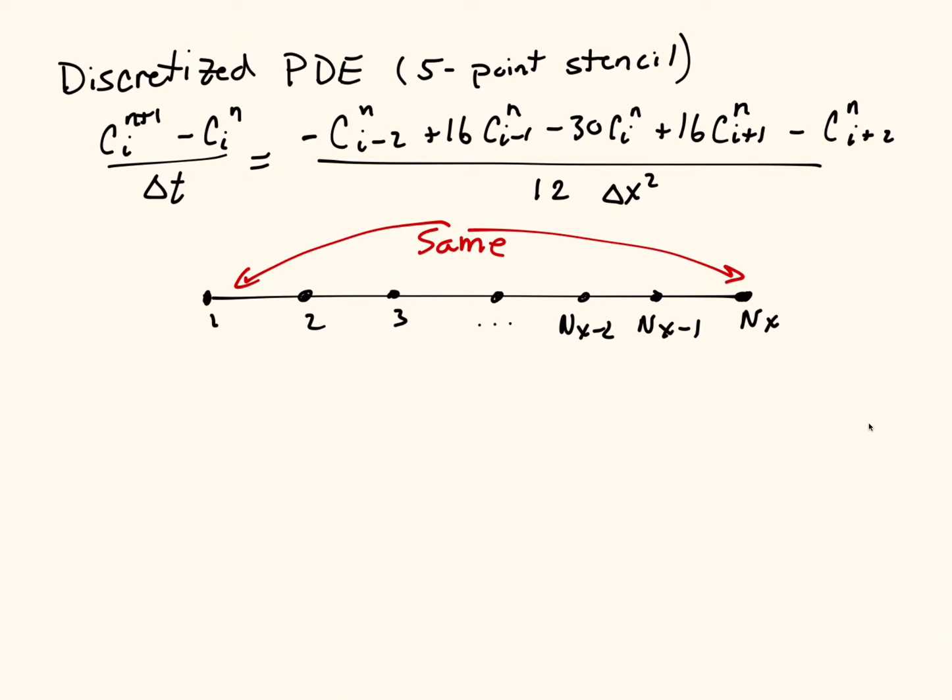Which means that if I'm sitting at i=1 and I discretize this equation, this discretization uses two points to the right. So this is my first point to the right and then my second point to the right is over there. To the left I'm also going to need two points. But what are those points? Well, if I look at what's going on on the other side,